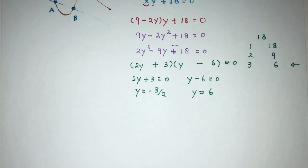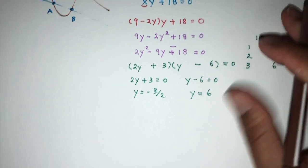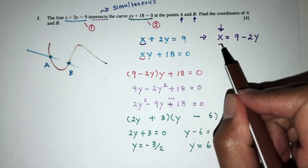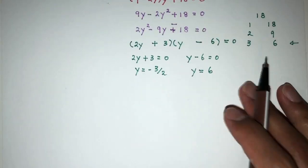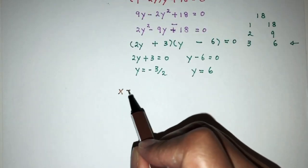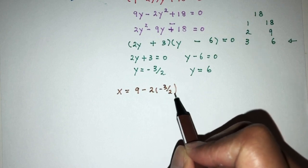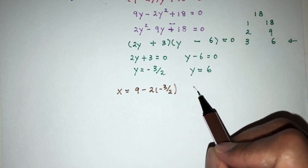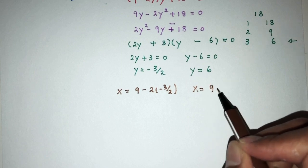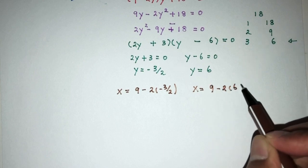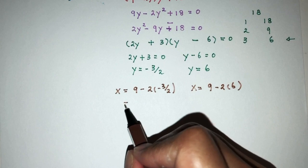Okay, so that will be the first two values of y. Now, let's have a look what are the values of x that we can have. So, we place in the x formula right here. So, x will be equal to 9 minus 2y. y is this value. And here we have x is equal to 9 minus 2y will be this value. Let's see what do we get.